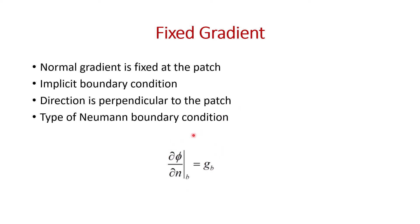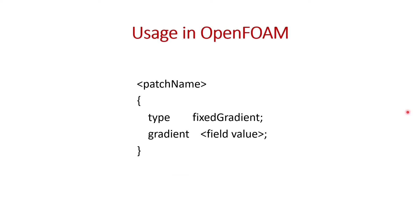This is given as the fixed gradient expression: del phi by del n — the gradient at the boundary — is fixed and given by gb, where gb is some specified value. To use it in OpenFOAM, we mention the patch name, then in curly brackets write type fixedGradient, and mention the value of that gradient. This is how we implement it in OpenFOAM, specifying on which patch we want to apply it.